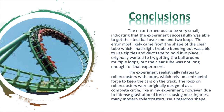My analysis was that the error turned out really small overall, showing that the experiment successfully got the steel ball over one and two loops and that the theoretical equations worked out. The error most likely came from the shape of the vinyl tube, because I had a little trouble bending it, though I used zip ties and duct tape to hold it in place. I originally wanted to try multiple loops, but the tube wasn't long enough, so I used two. Realistically, this experiment relates to roller coasters with loops, which rely on centripetal force to keep the cars on track. The loops were originally designed as complete circles, but due to intense gravitational forces causing neck injuries, most modern roller coasters use a teardrop shape instead for less impact on the neck.